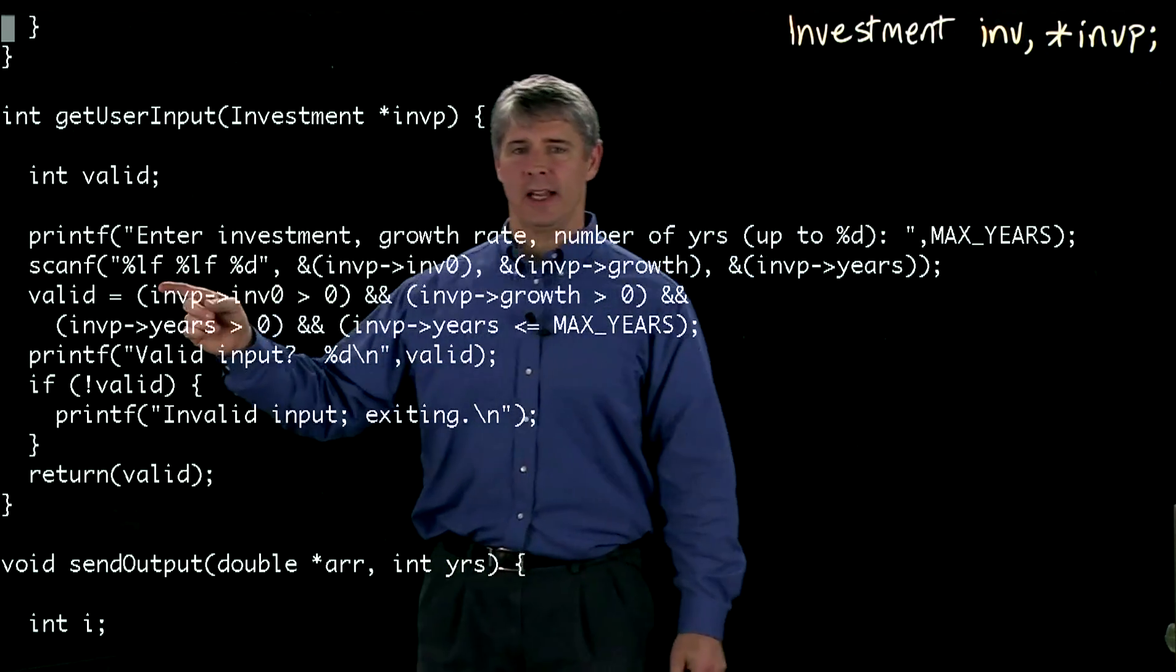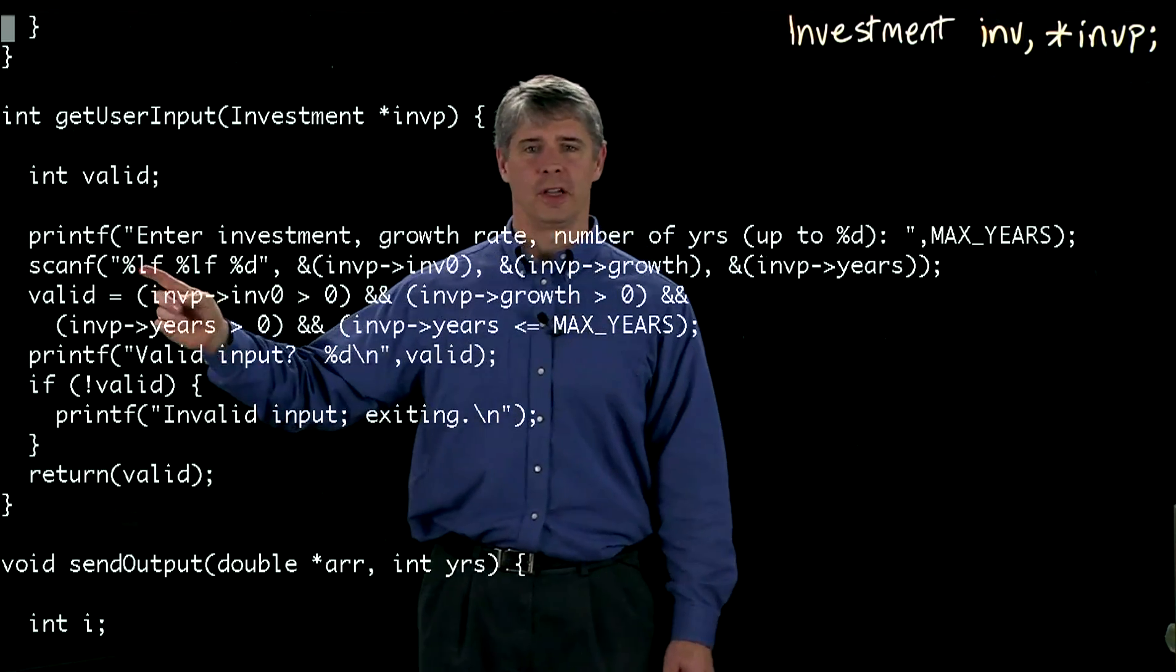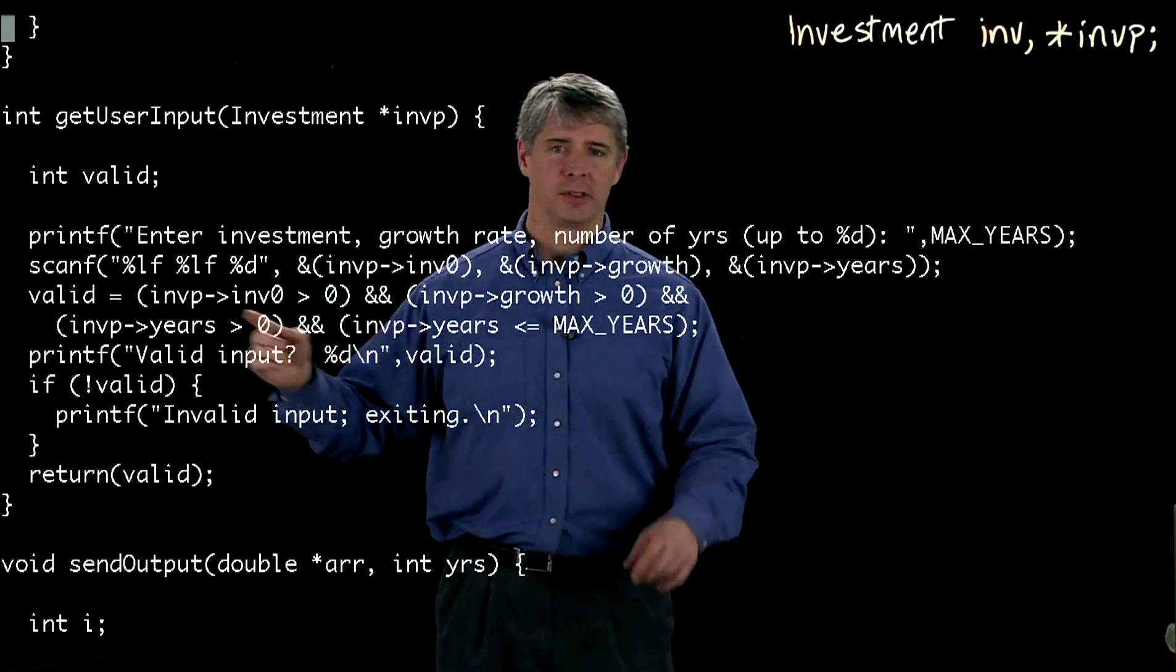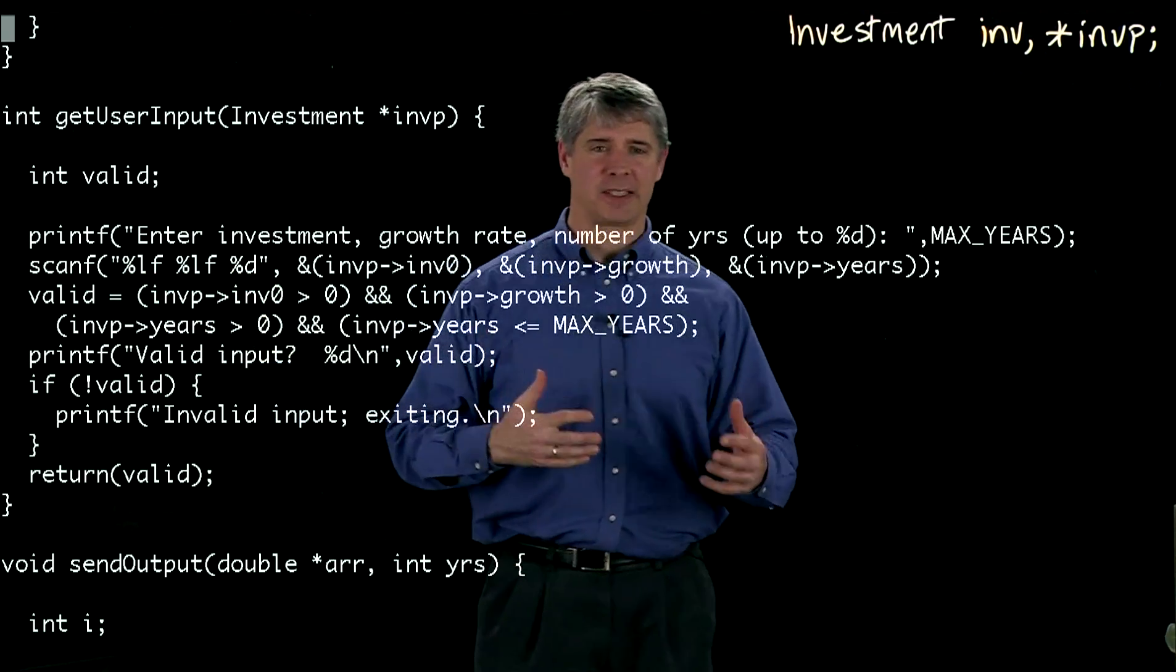And this %lf, %lf, %d means that it's looking for a long float, which is a double. It's looking for a double, a double, and an integer. That's what's expecting you to type in.